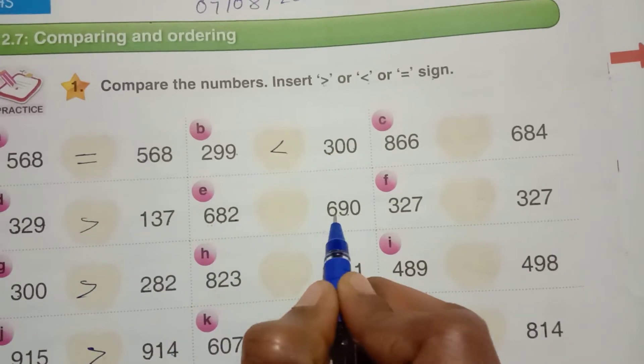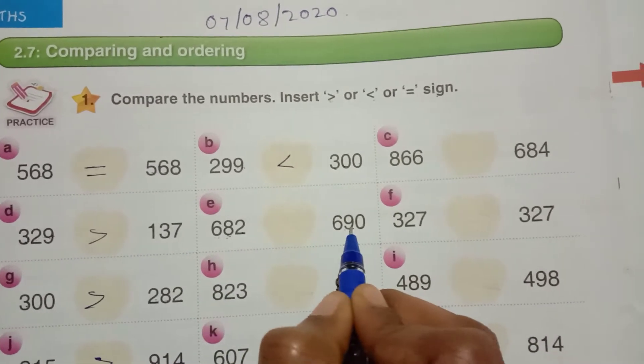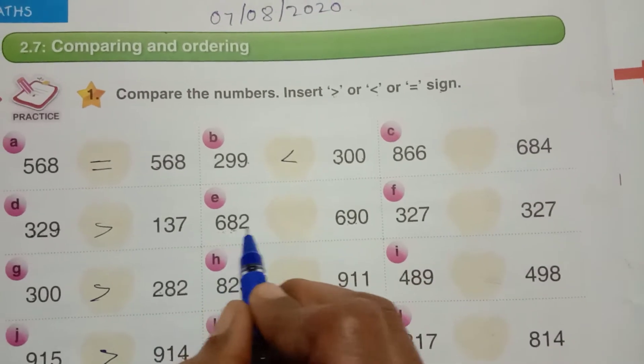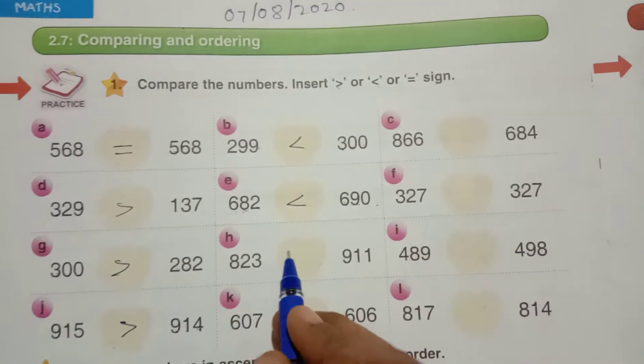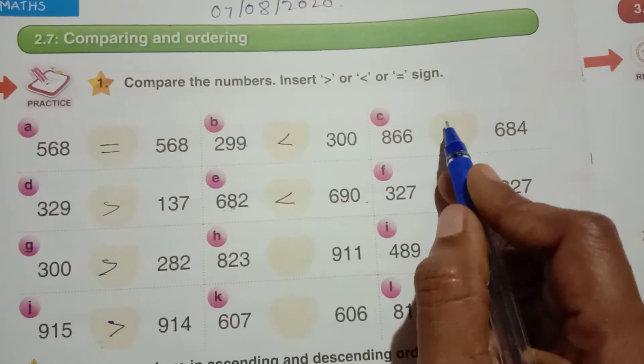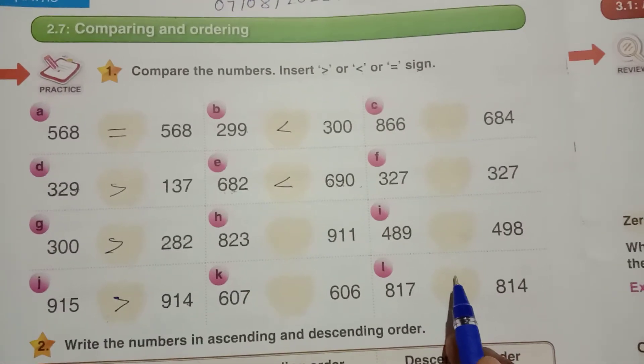Here 682, here 690. Here also 6 is there, here also 6 is there. See the tens place, here 8 is, here 9 is there. Here 682 is less than 690. Like that, remaining signs you have to insert in the given space in your textbook.